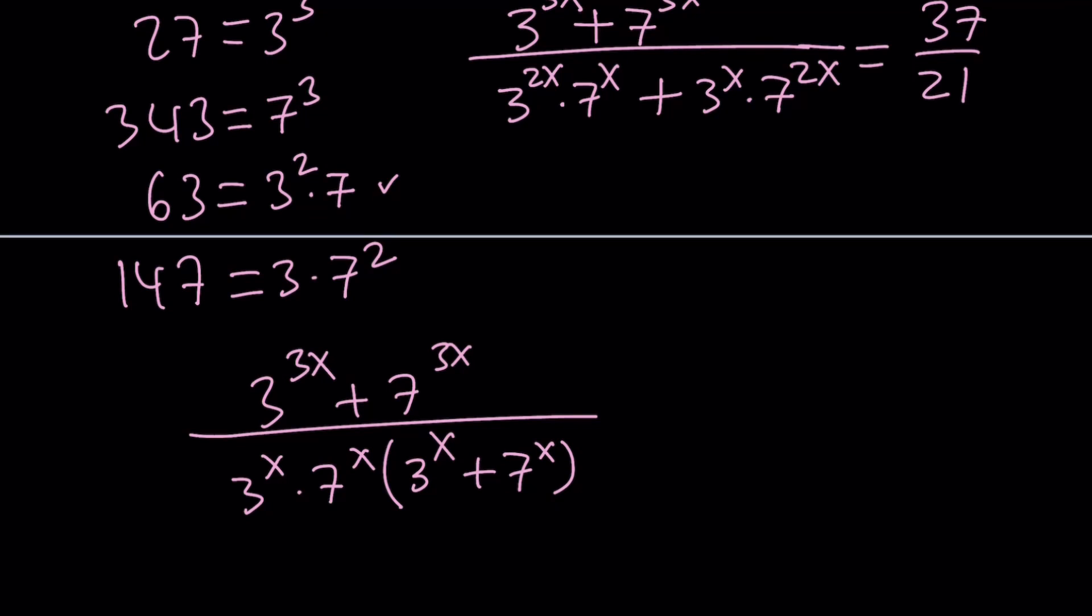Now at this point, you may want to use substitution. Why? Because it's a little easier to see what we're going to do if we use letters. Since we have 3^x and 7^x as our bases, I'm going to call this one a and call this one b.